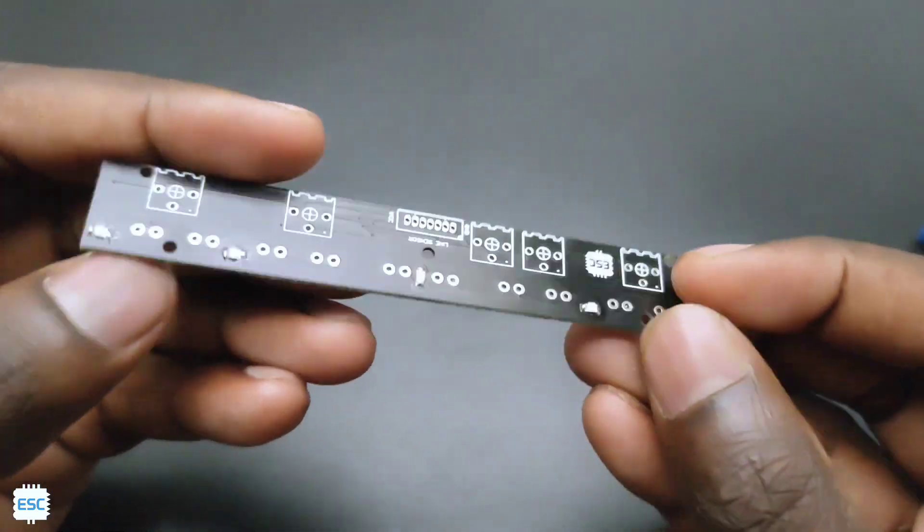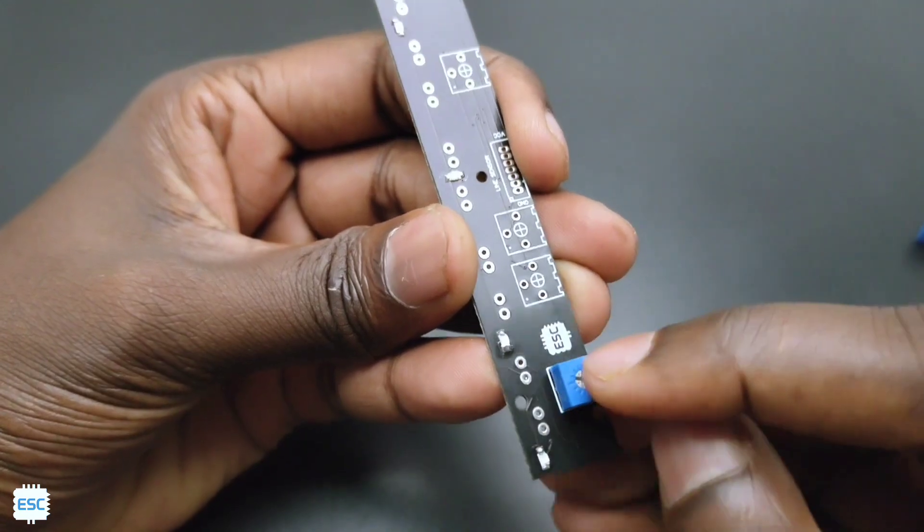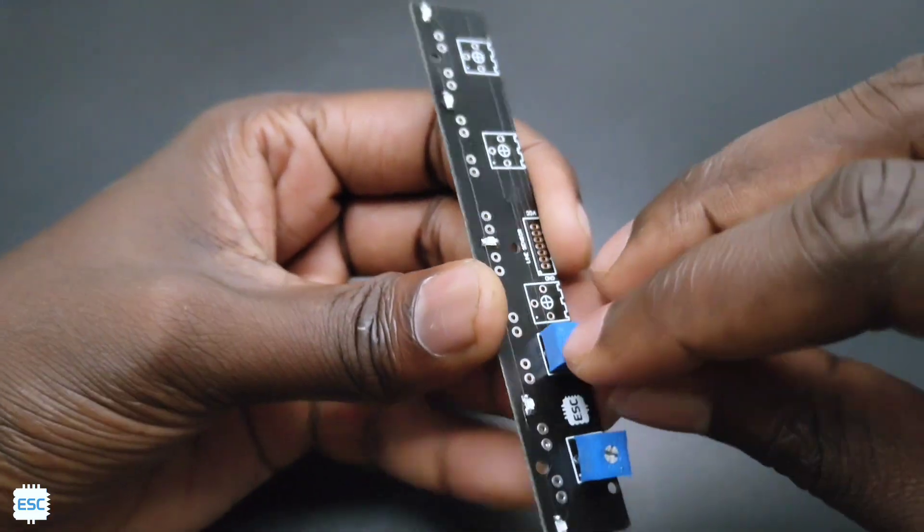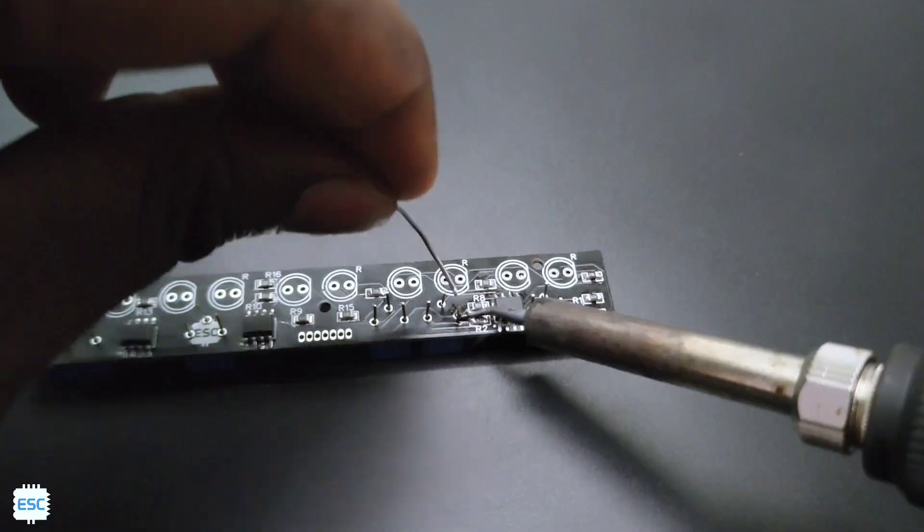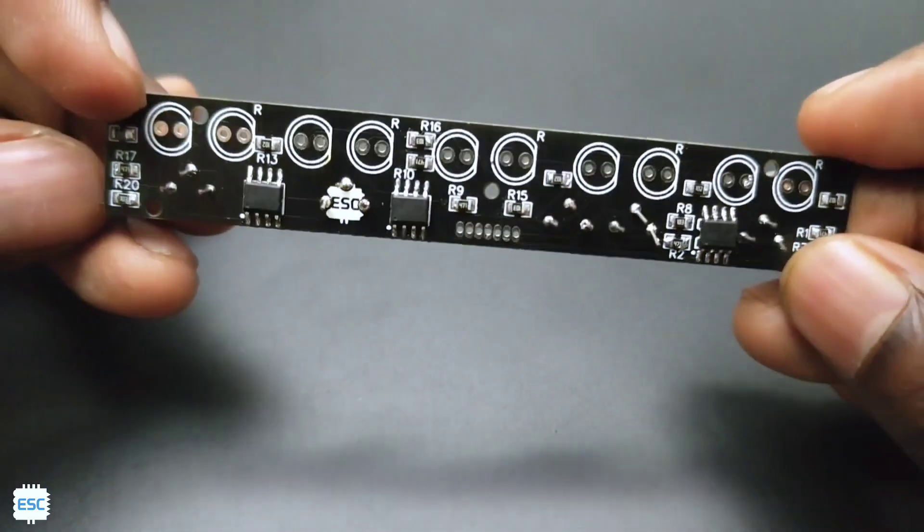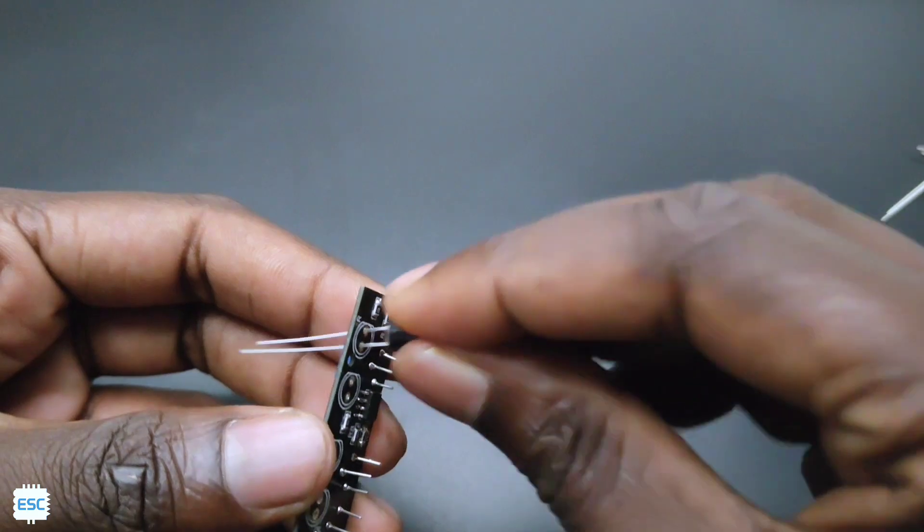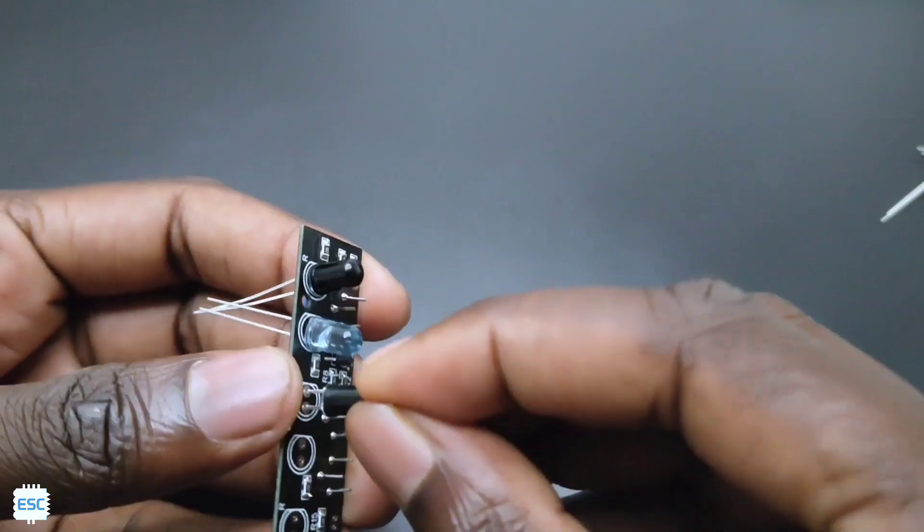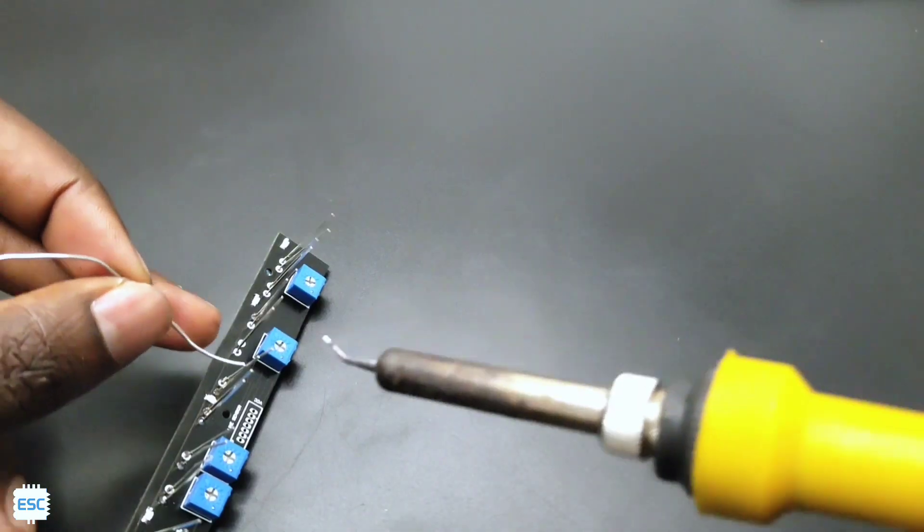After completing the SMD soldering, I placed the variable resistors and soldered them.